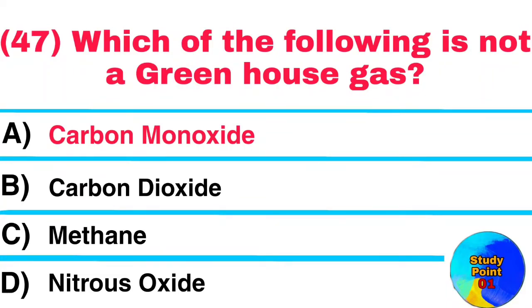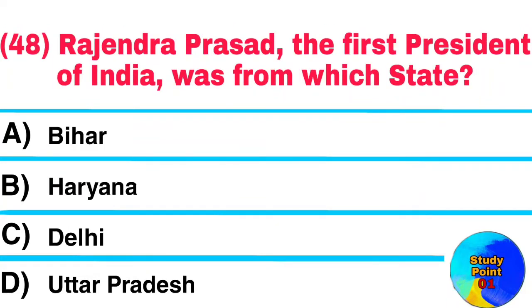Question No. 48. Rajendra Prasad, the first President of India, was from which state? Answer: Bihar.